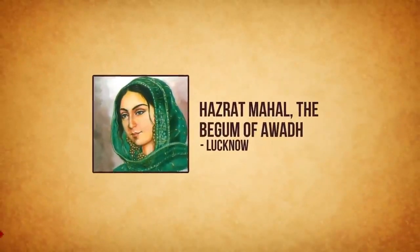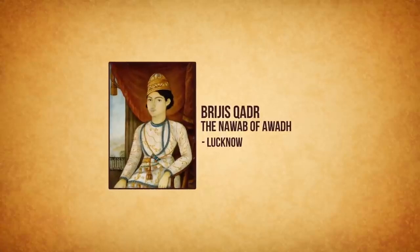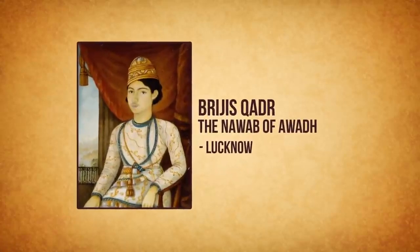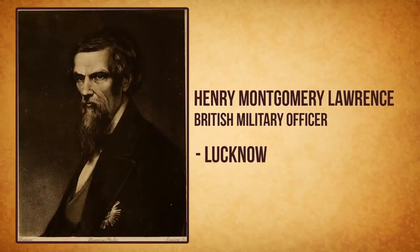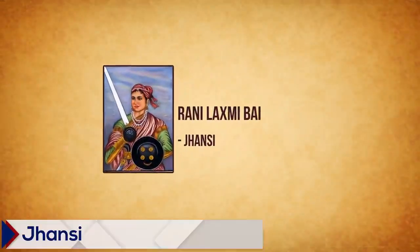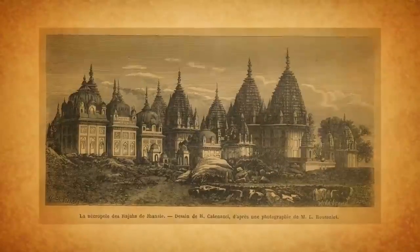In Lucknow, the revolt was led by Hazrat Mahal, the Begum of Awadh. She had proclaimed her young son Birjis Qadir the Nawab of Awadh, against the wishes of the British. Henry Lawrence, the British resident, was killed in Lucknow. In Jhansi, after some initial vacillations, Rani Lakshmibai assumed the leadership of the mutiny. After being defeated at Jhansi, she captured Gwalior with the help of Tantya Tope and Afghan guards.